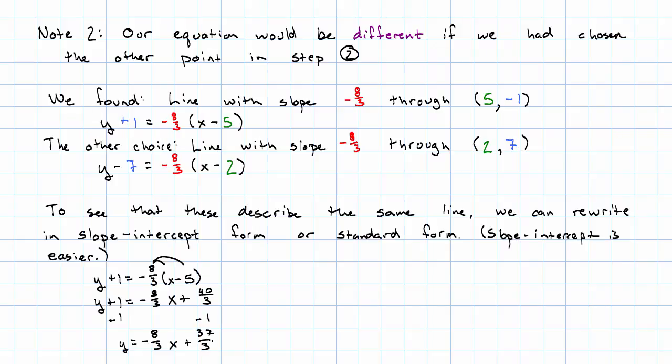With the second version of the equation, we've got y minus 7 is negative 8 thirds (x minus 2). First we distribute. y minus 7 is negative 8 thirds x plus 16 thirds. Add 7 to both sides. And we get y equals negative 8 thirds x plus 37 thirds. Again, you can use your calculator for that arithmetic if you'd like.